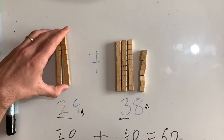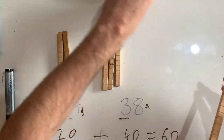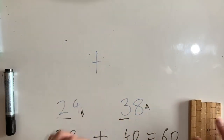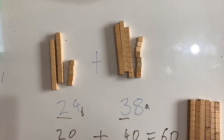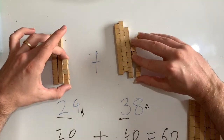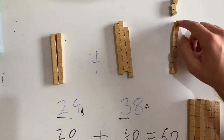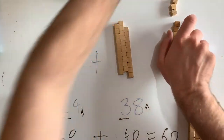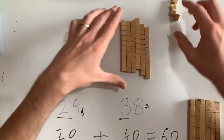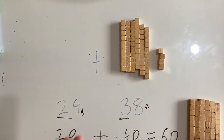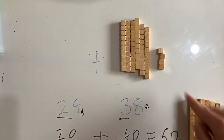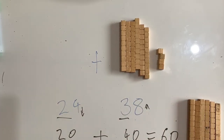So my estimated answer is 60. Now we can work it out for real and see how close the estimation is. Using MAB blocks, I add the units together first — that gives me 12 units, which I trade for a ten. Then I add the tens together, and my actual answer is 62. Wait — let me recount: one, two, three, four, five, six, seven, eight, nine, ten, eleven, twelve, thirteen units — trade one ten, giving an actual answer of 64. So the estimation doesn't give the exact answer, just an approximate one. The difference is only four, which tells me my calculation is pretty good because it's pretty close.